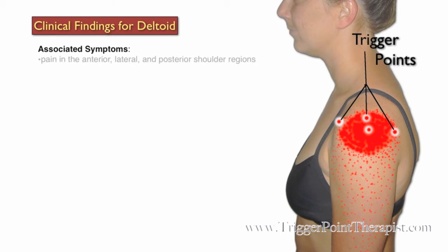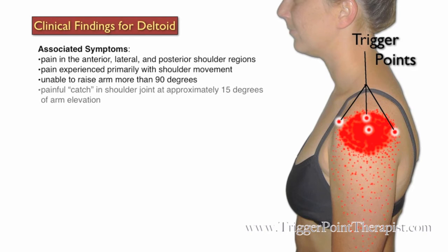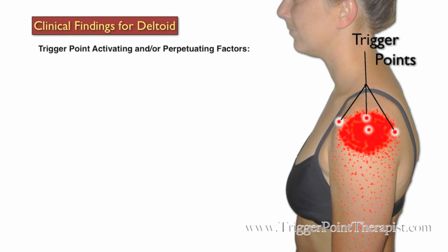Let's take a look at the clinical findings for the deltoid trigger points. Clients with active trigger points in the deltoid muscle may complain of pain in the anterior, lateral, and posterior shoulder regions, and they may also say the pain is experienced primarily when they move their shoulder. They are usually unable to raise their arm more than 90 degrees, and they also complain of a painful catch in their shoulder joint when they raise their arm to about 15 degrees.